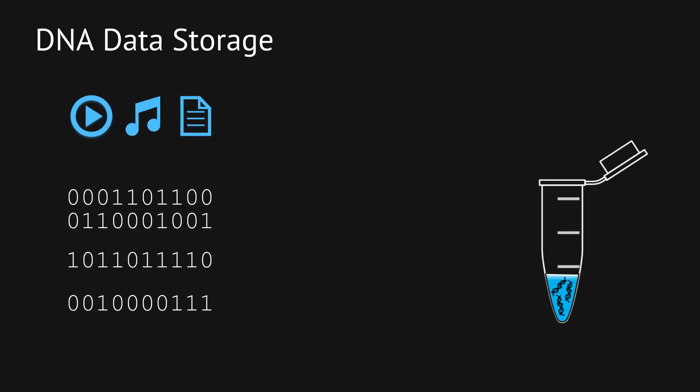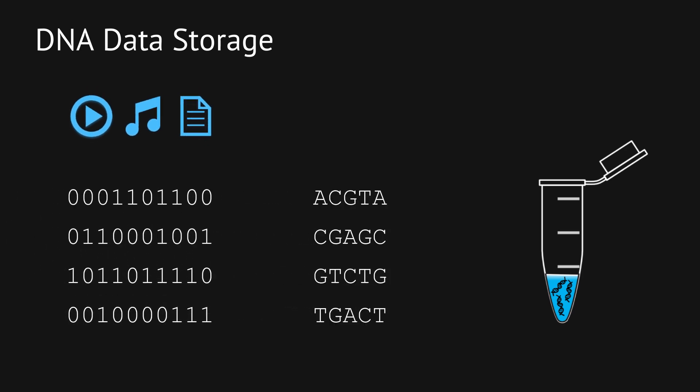DNA is a nice material for storage because the molecules are super small and they don't really break down over time. To store data in DNA we first split up a file into small chunks, then we translate 0-1 bits to the ACGT alphabet and create DNA strands that represent the data. We store the strands in a test tube until we want to read them back.